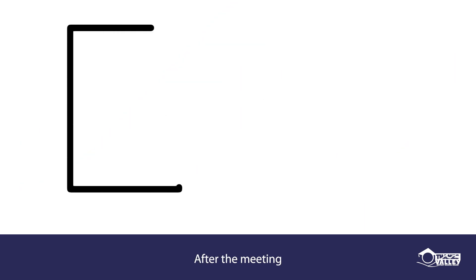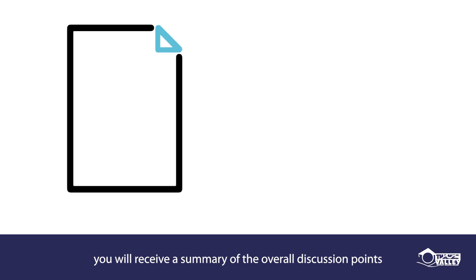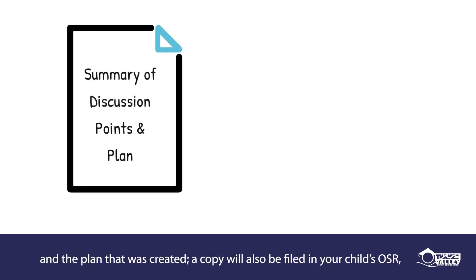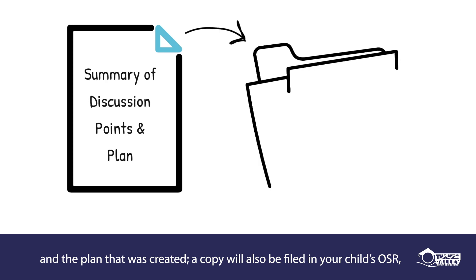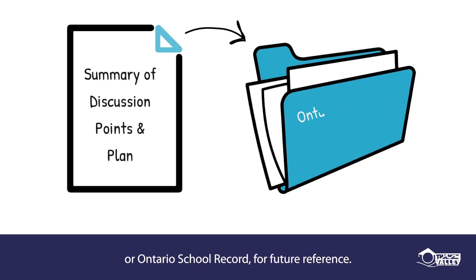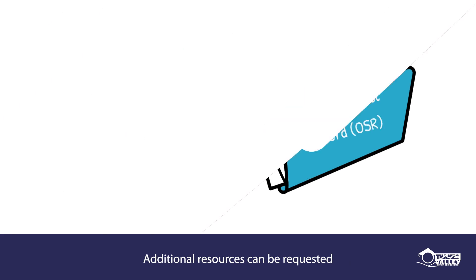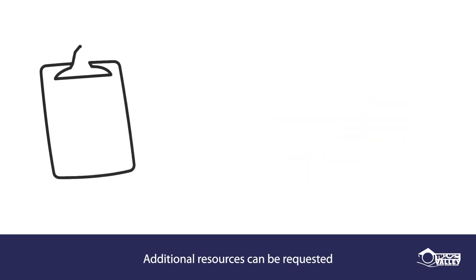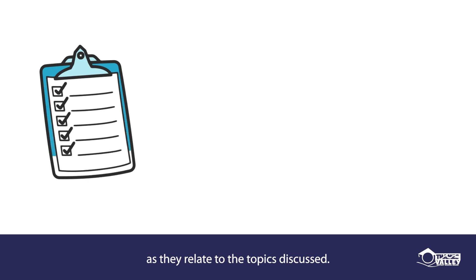After the meeting, you'll receive a summary of the overall discussion points and the plan that was created. A copy will also be filed in your child's OSR or Ontario school record for future reference. Additional resources can be requested as they relate to the topics discussed.